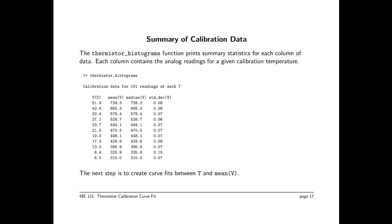The result of the histogram screencast showed that we had some good data, and the program, Thermistor Histograms, produced this table. We're going to use the first two columns, temperature, which was the temperature at which the calibration data was recorded, and mean V, which is the mean of the analog reading for several readings, hundreds of readings actually, at each of the temperatures. Given those first two columns, the next step is to create curve fits between T and the mean of V.